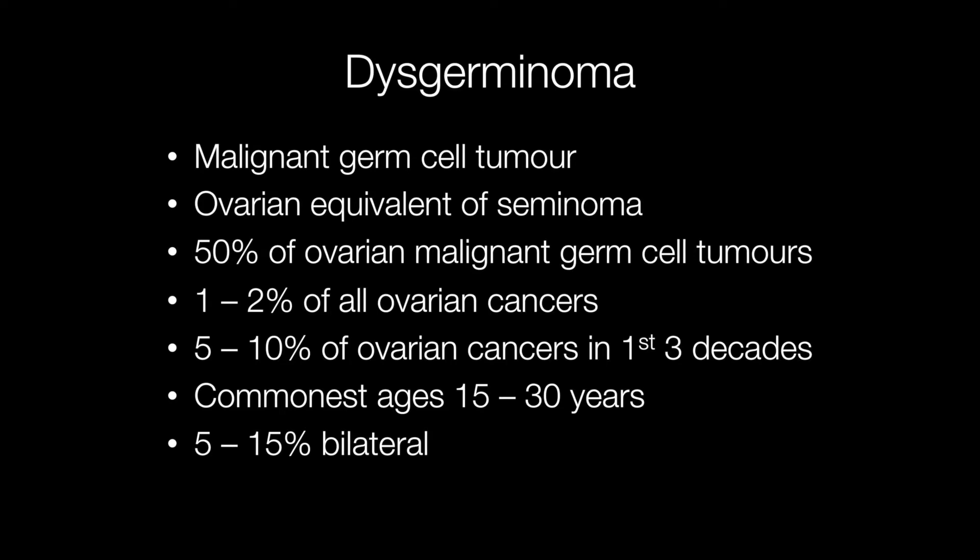They occur most frequently between the ages of 15 and 30 and they account for approximately 5-10% of ovarian cancers occurring in the first three decades. The majority of dysgerminomas are unilateral but 5-15% are bilateral.